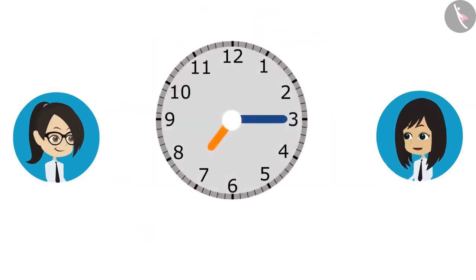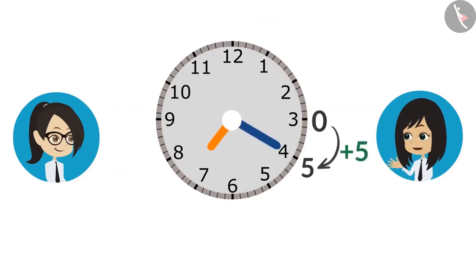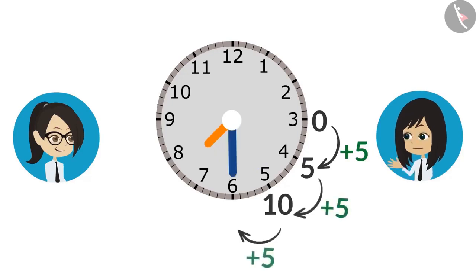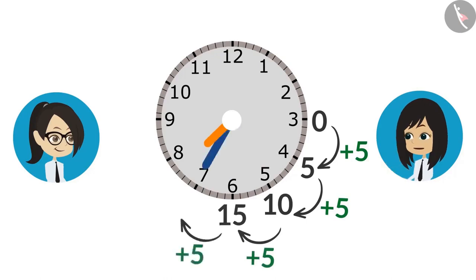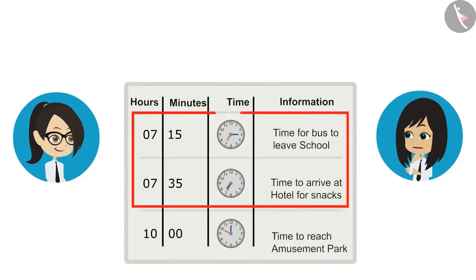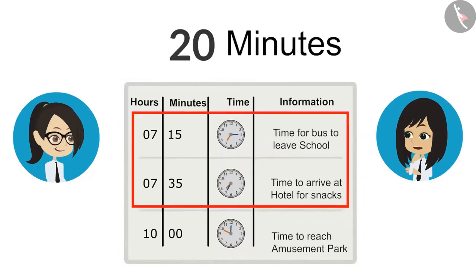When the minute hand is at 3, we will consider that time as 0. It takes 5 minutes to reach 4 and 10 minutes to reach 5. In the same way, it takes 15 minutes to reach 6 and 20 minutes to reach 7. This means the bus is taking 20 minutes from school to reach the hotel.